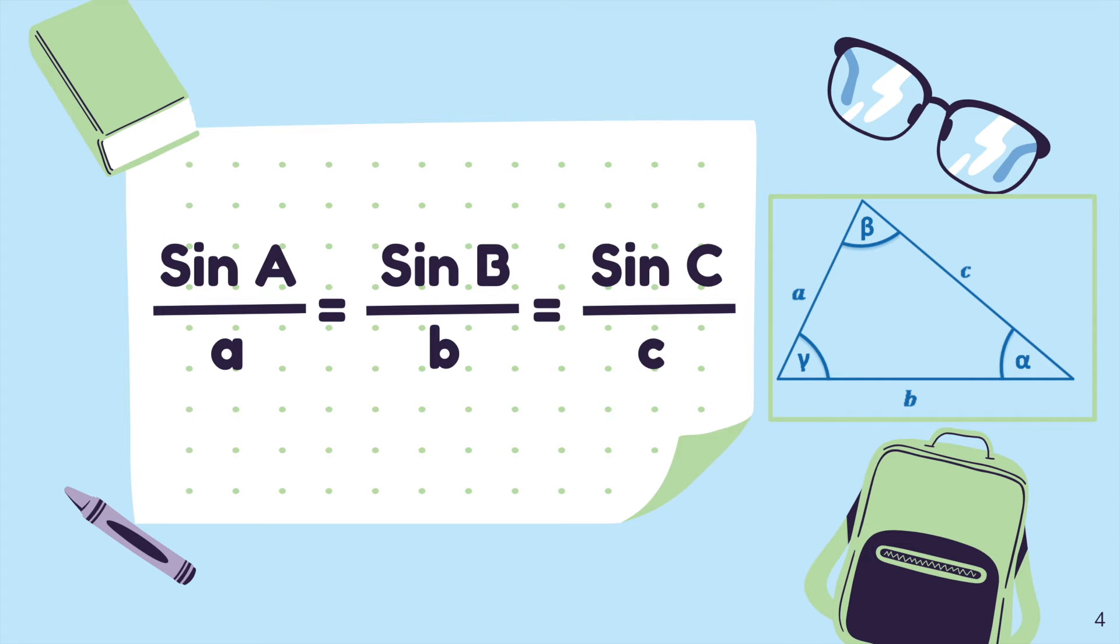Now, this is the main formula of the sine rule. The law of sines can be written as sin A over a equals sin B over b equals sin C over c.